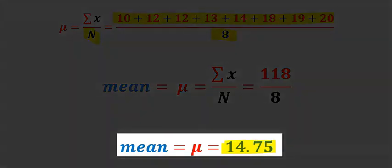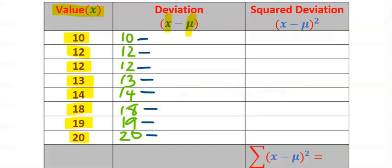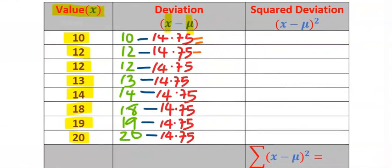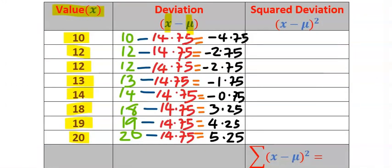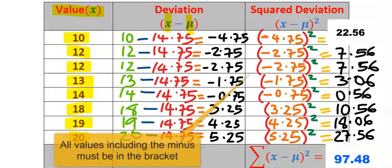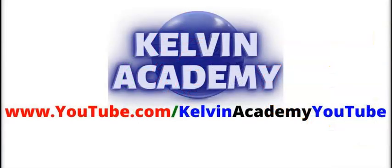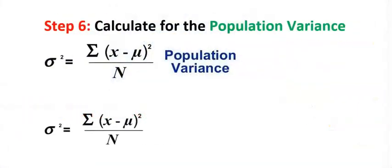Each value will subtract the mean of 14.75. Next compute the results, and after computing each deviation, calculate the squared deviation. Then sum up all the values calculated.